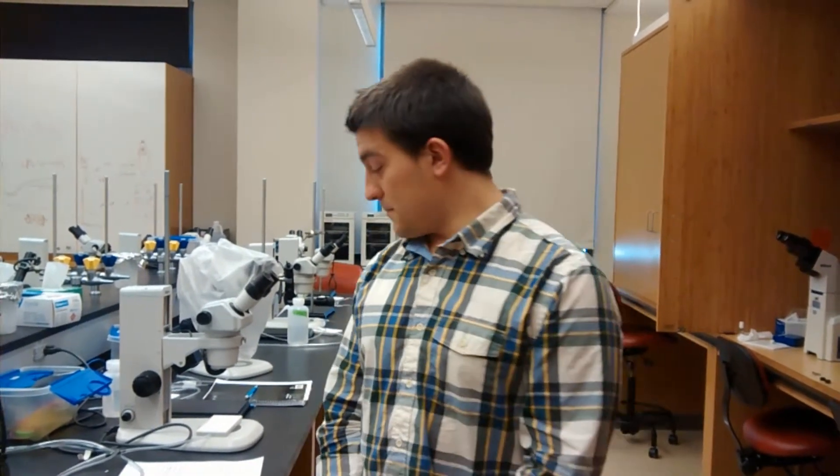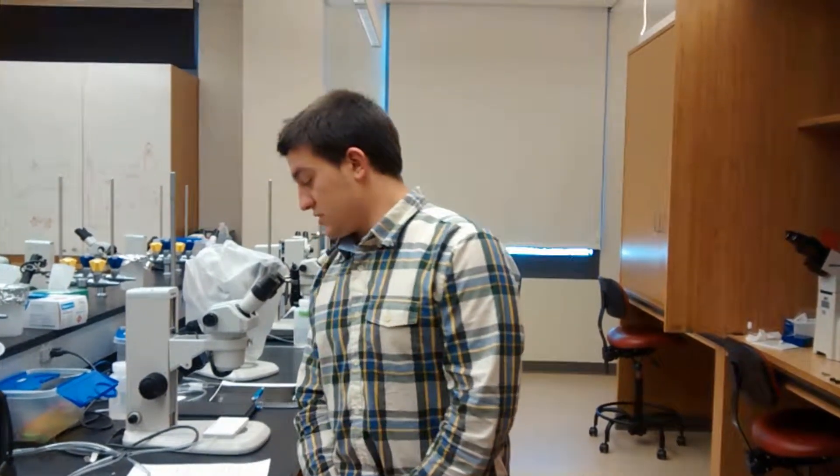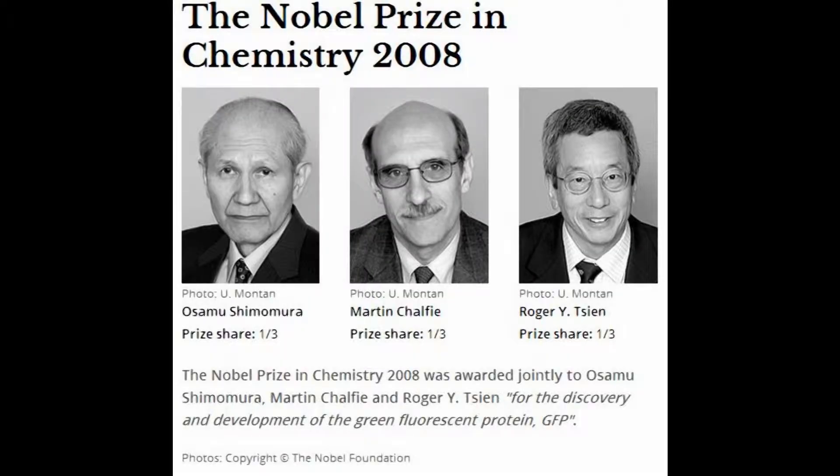Green fluorescent protein is a naturally occurring protein which was discovered in jellyfish back in the 70s. And in 2008, Charpy, Shamora, and Chan received the Nobel Prize in Chemistry for their work with GFP.